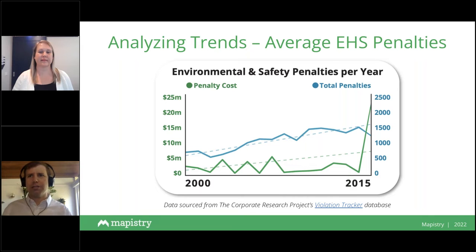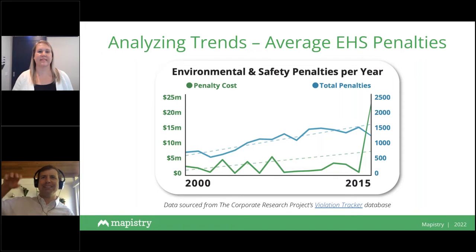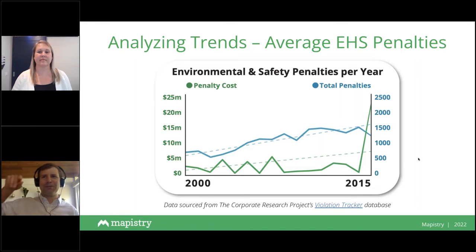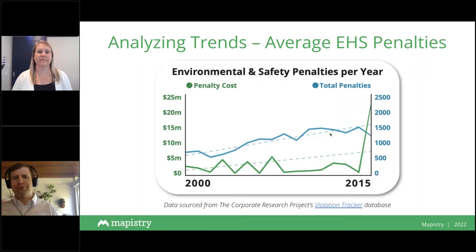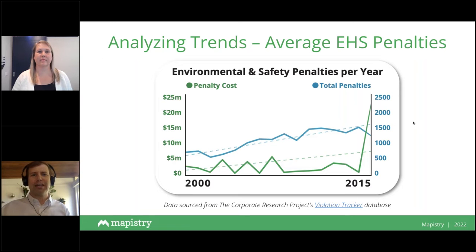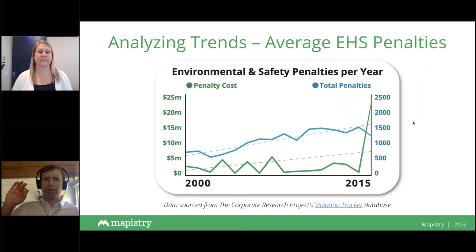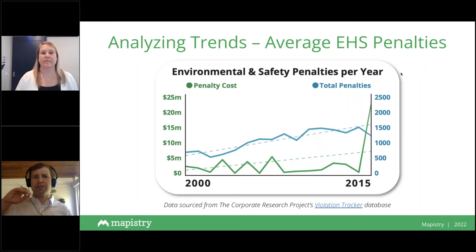When we put together data on violations and costs, everyone takes this slide back to say 'this is why I need more budget this year' — because the penalty cost just goes up and to the right. The trend line for number of penalties is going up. This is a really good stat — we'll send out the recording and the slides so you can use them. Both the number of penalties and the penalty cost have been increasing significantly year over year over the past 15 to 20 years.